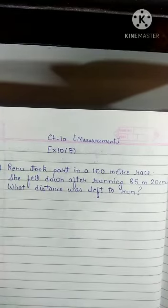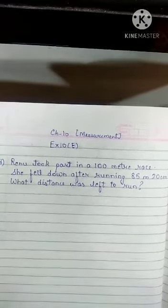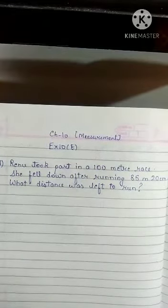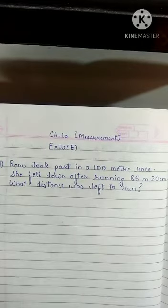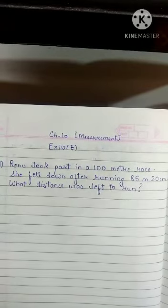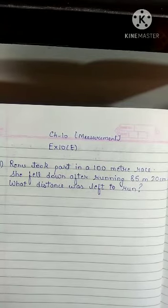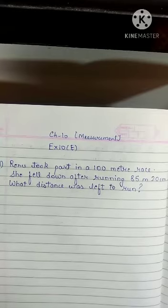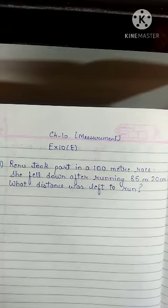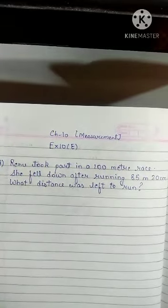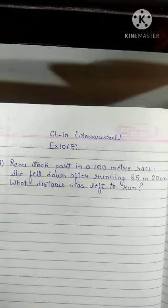Renu participated in a 100 meter race. When she started running, she covered a distance of 85 meter 20 centimeter, and after that she fell down. So how much distance was left to run?